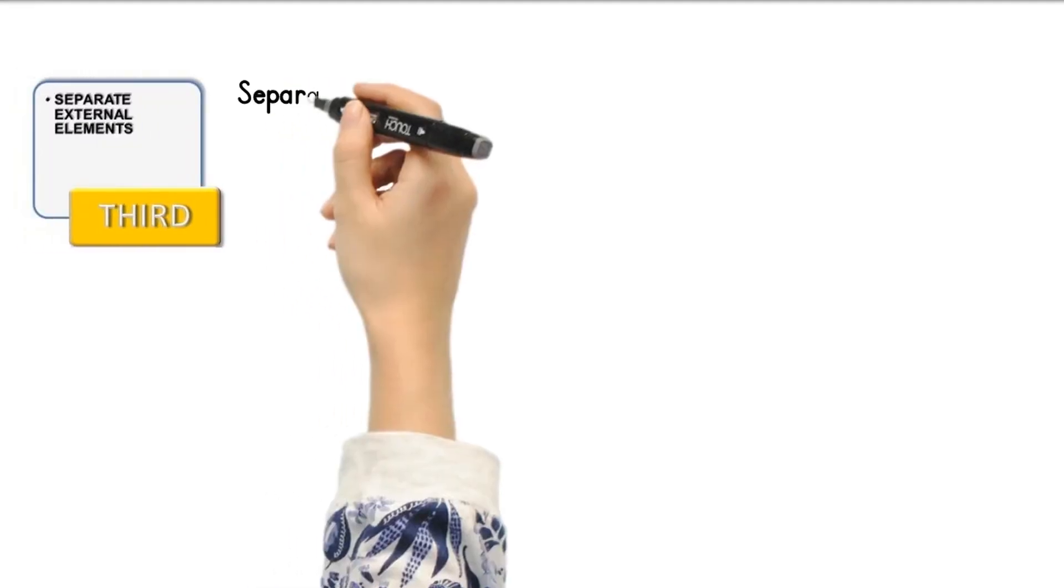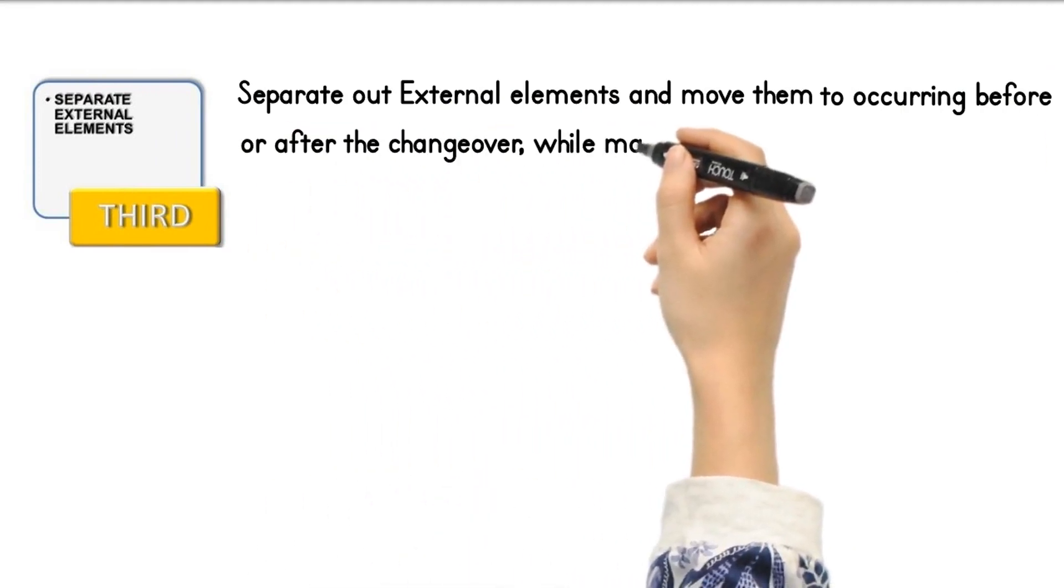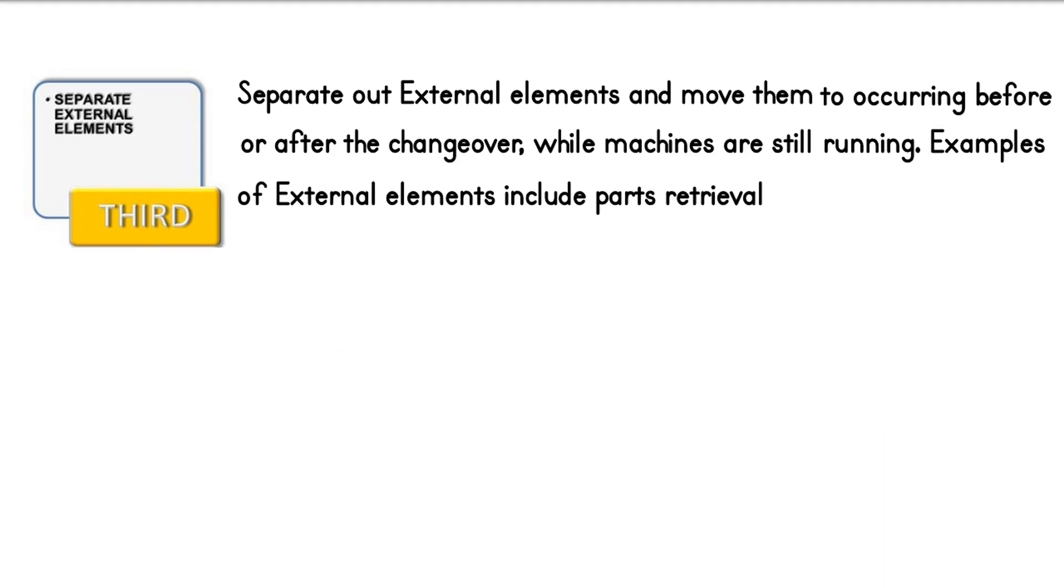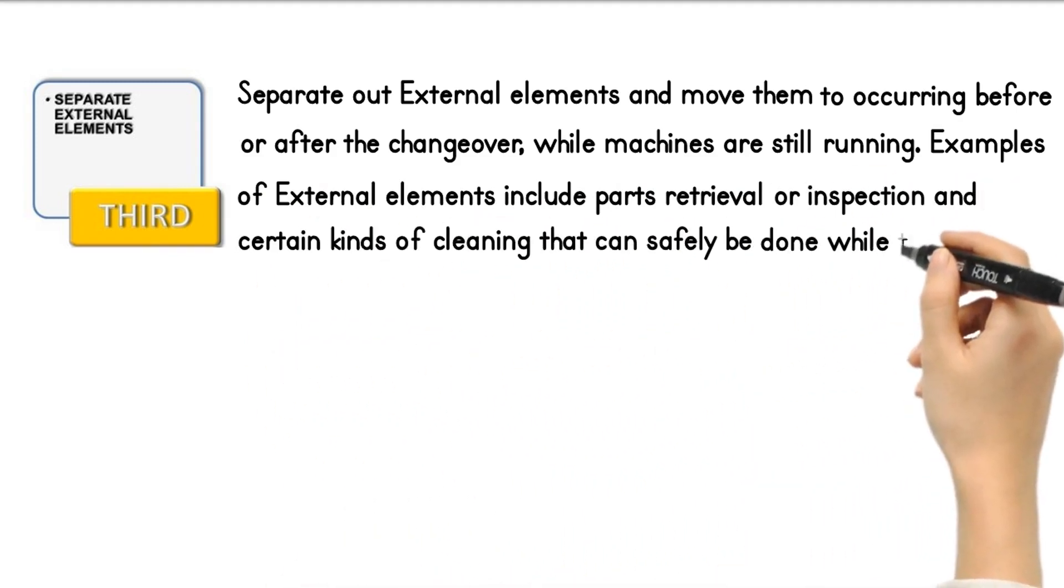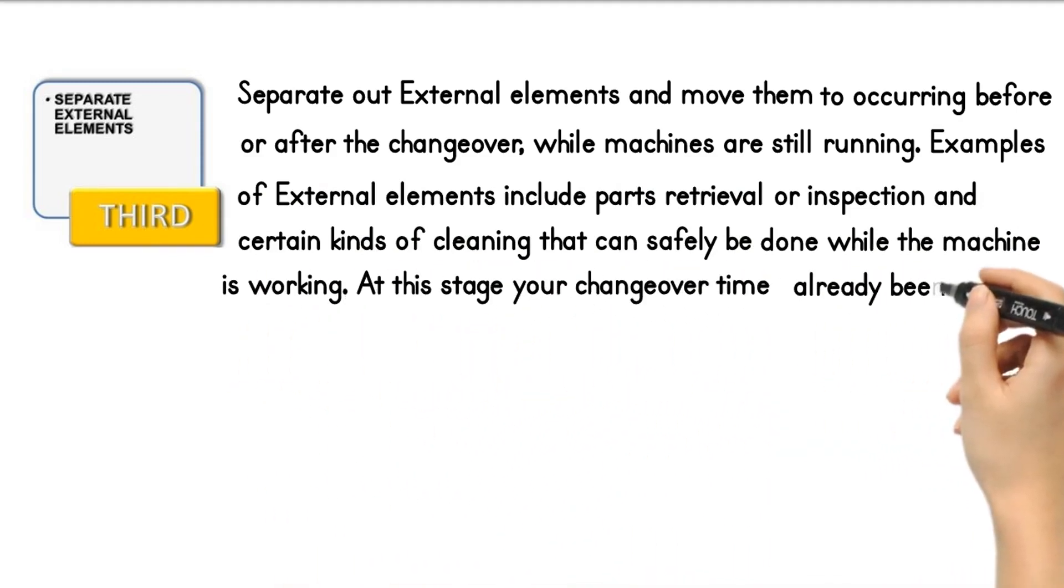Third step: Separate out external elements and move them to occurring before or after the changeover, while machines are still running. Examples of external elements include parts retrieval or inspection and certain kinds of cleaning that can safely be done while the machine is working. At this stage your changeover time has already been halved.